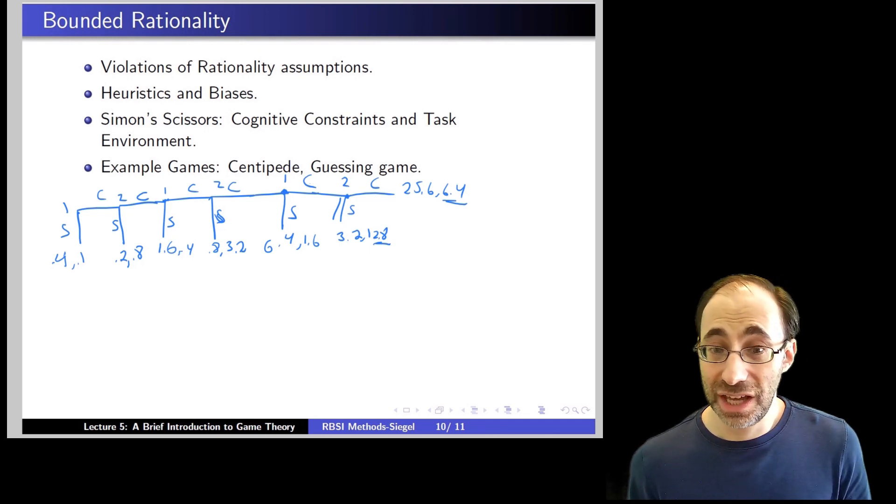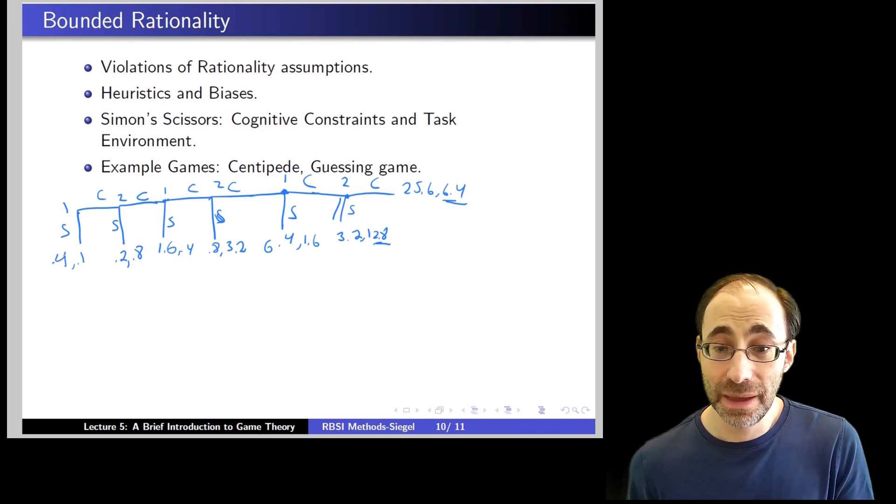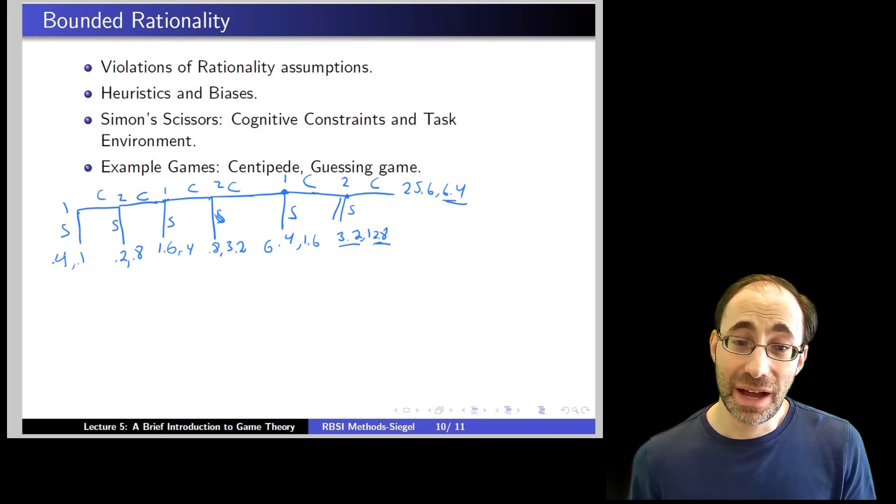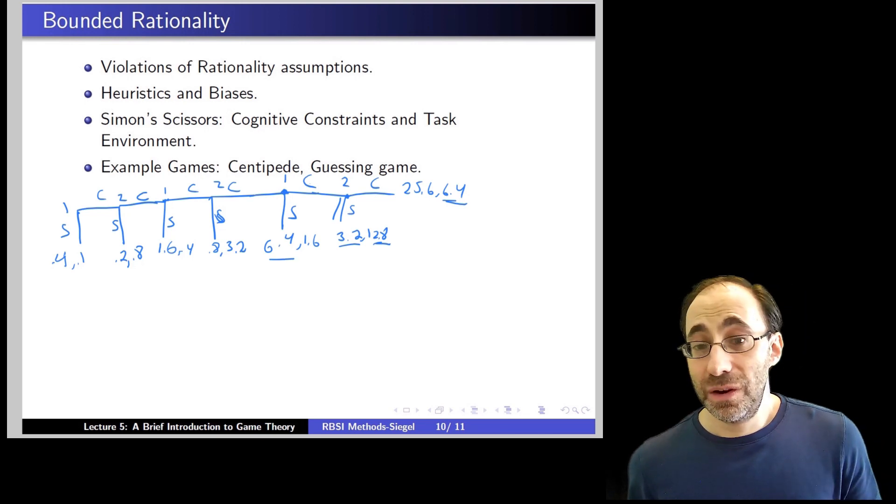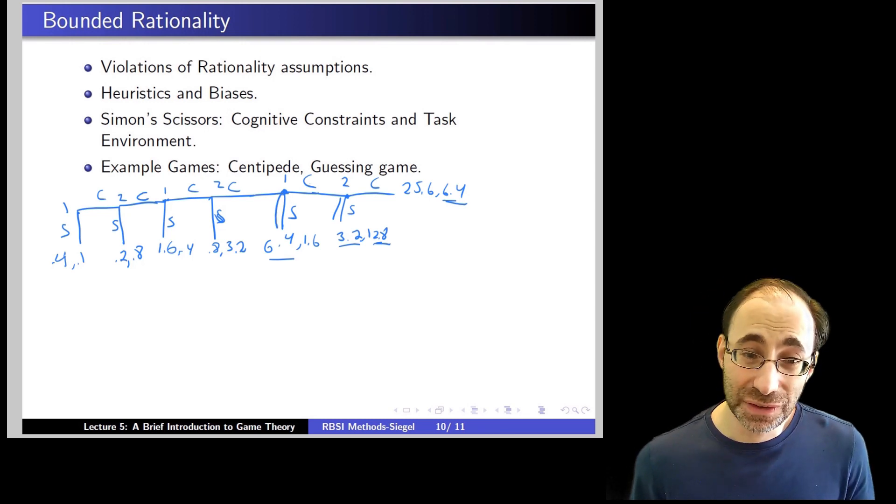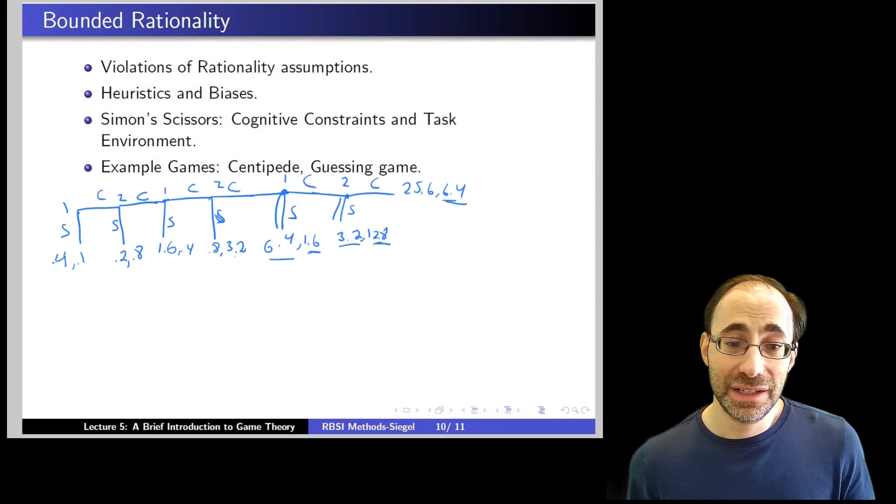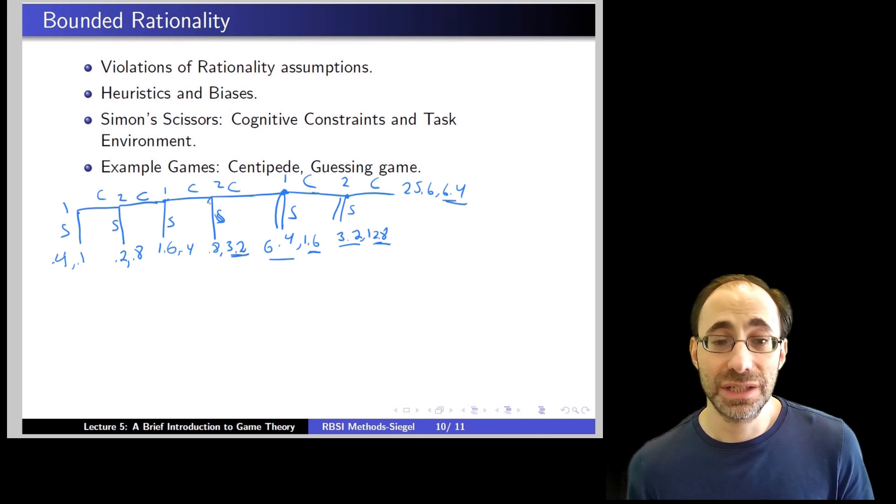Now, we've worked back a step. Player one can continue, in which case player one knows that player two, being rational, will choose to stop, in which case player one will get $3.20, or player one can stop and get $6.40. So, obviously, player one should stop being rational. We go back another step. Player two can decide between continuing, knowing that player one will then stop, getting player two $1.60, or stop immediately and get $3.20. $3.20 is better than $1.60, so player two should stop.